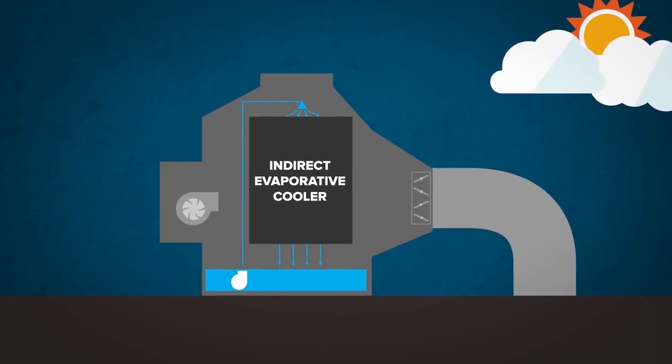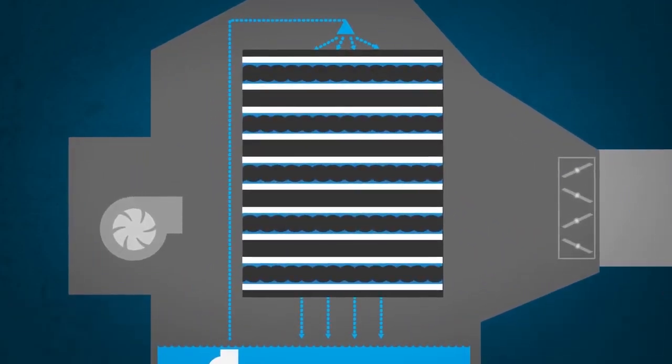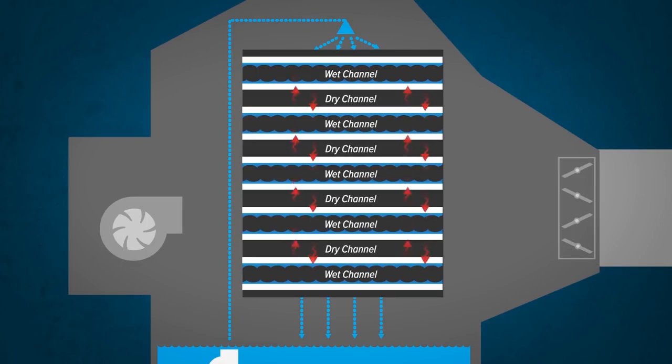Let's explain that further. The heat exchanger in the Climate Wizard is made up of a series of alternating wet channels and dry channels, which are designed to transfer heat between them.